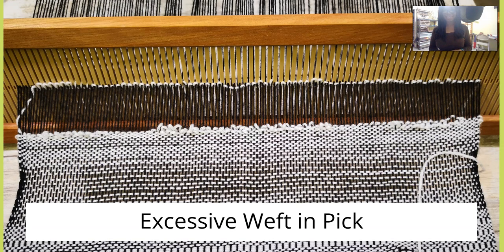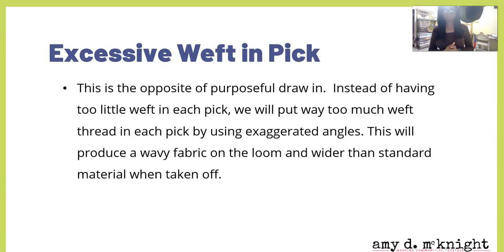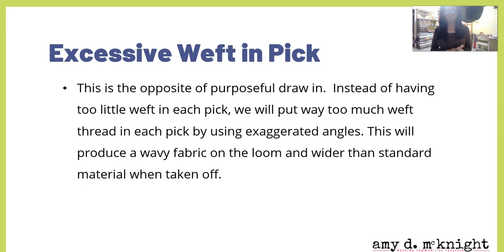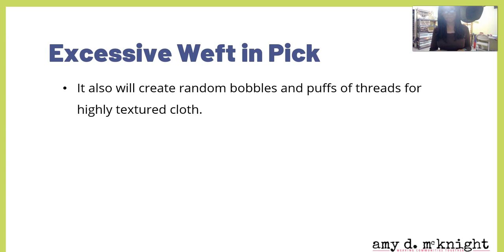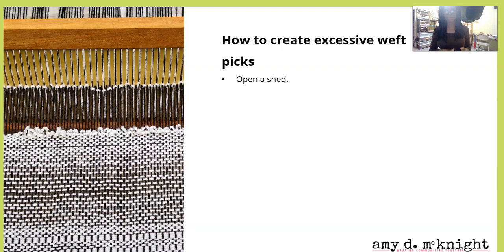Excessive wefts in a pick — this is the opposite of purposeful draw-in. Instead of having too little weft in each pick, we will put way too much weft in each pick by using exaggerated angles. This will produce a wavy fabric on the loom, and wider-than-standard material when taken off. It will also create random bobbles and puffs of threads for a very highly textured cloth.